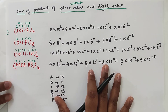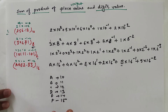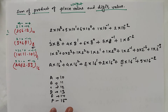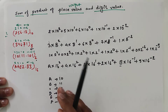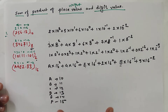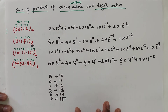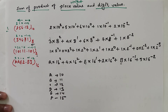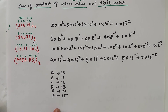So this is all about the number system — the base, the types of number systems, and how we can represent a number in terms of place weight value and digit value. In the next video, we will learn about the conversion of number systems: how to convert one number system into another. Thank you.